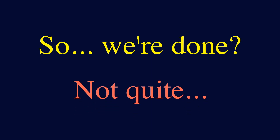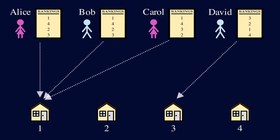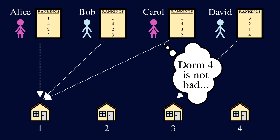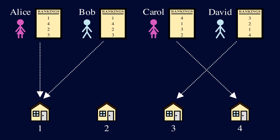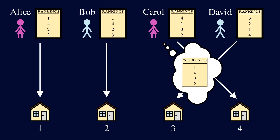The answer is not quite. It turns out it's very prone to manipulation. After Carol was assigned her least favorite dorm, she realized it was because she put dorm 1 as her top choice, where she only had a one-third chance of being picked. Her second choice isn't that bad in her opinion. So the following year, she decides to swap dorm 4 and dorm 1 in her rankings. But now, since only she put dorm 4 as her top choice, she's guaranteed to be assigned to it, and David to dorm 3. Then, only Bob and Alice are tied for dorm 1. Suppose Alice gets chosen for dorm 1, so Bob ends up with dorm 2. In the end, Carol still likes dorm 1 the most, but by lying, she's guaranteed to be assigned dorm 4, which is her actual second choice.